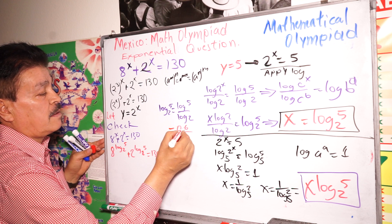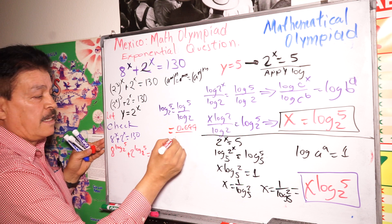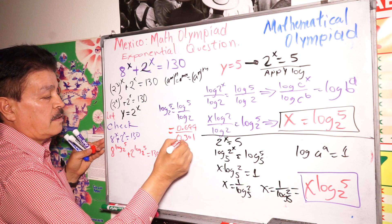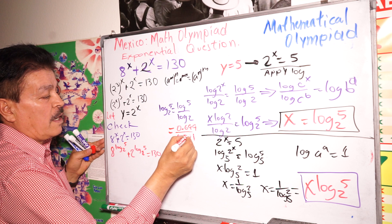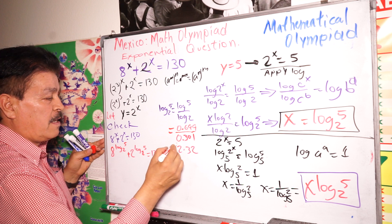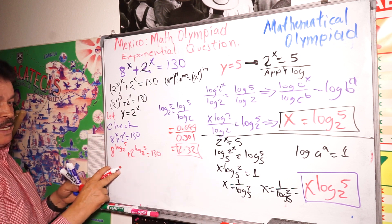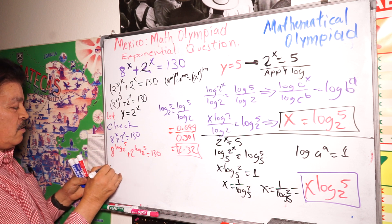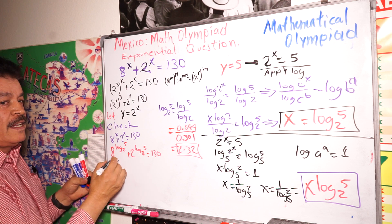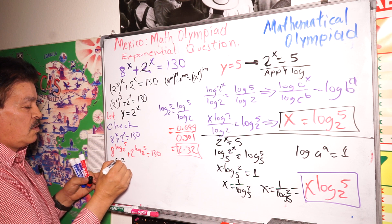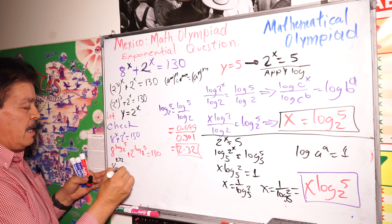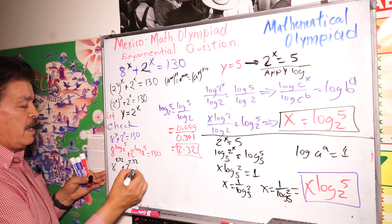This equals approximately 2.32. So we compute 8 to the 2.32 plus 2 to the 2.32. We substitute these numbers and check: 8 to the 2.32 plus 2 to the 2.32 equals 130.